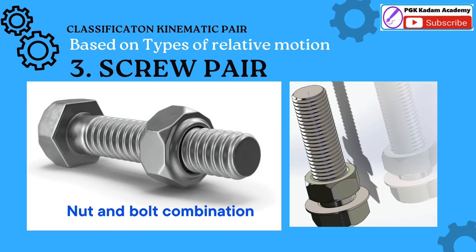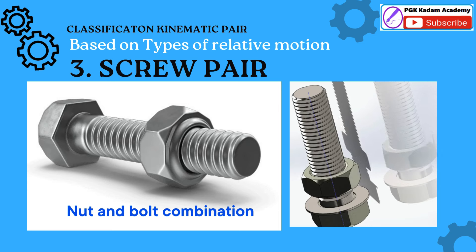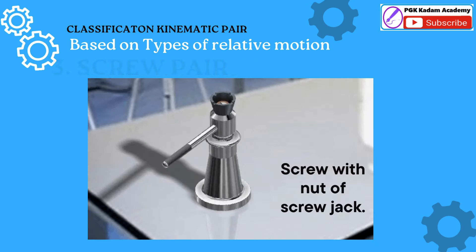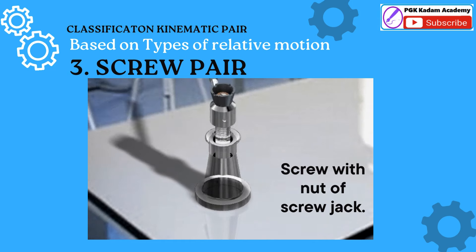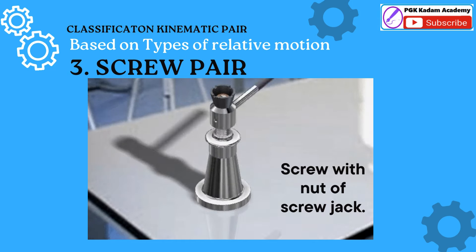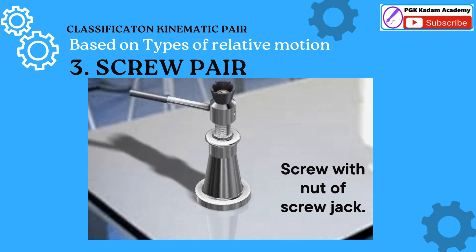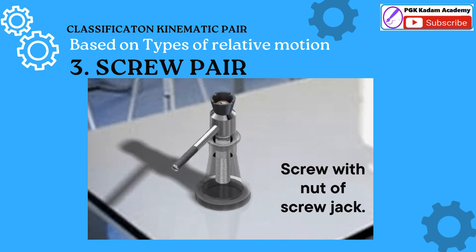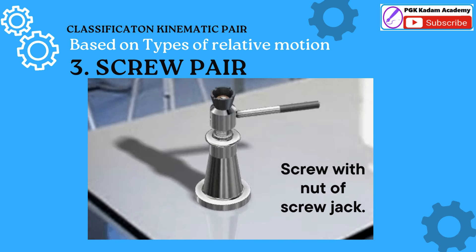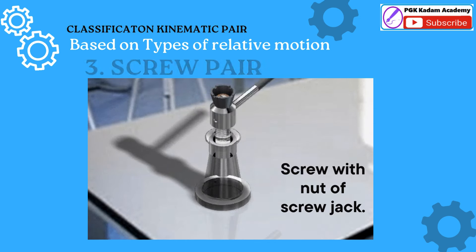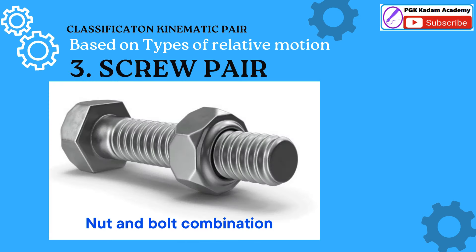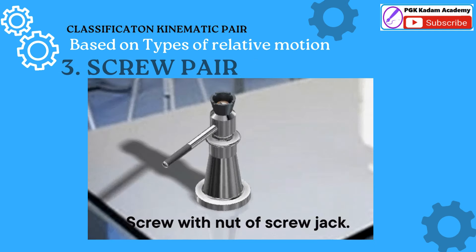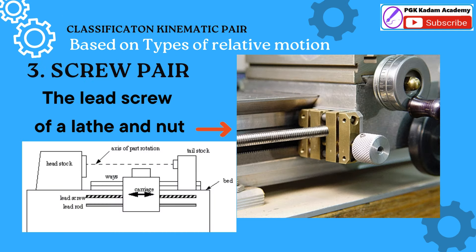Screw Pair: A screw pair is a fundamental kinematic pair that involves helical or spiral motion between the driver and the follower. It combines rotational and translational motion along the axis of a screw thread. Screw pairs are commonly found in mechanisms where motion needs to be transferred or translated with the help of threads. Examples include a nut and bolt combination, a screw with nut of a screw jack, and the lead screw of a lathe and nut.